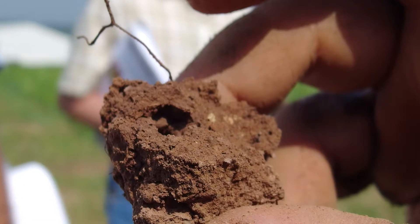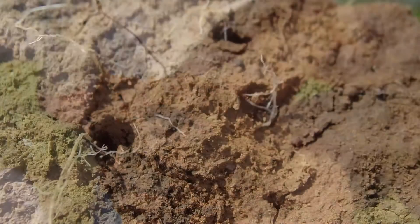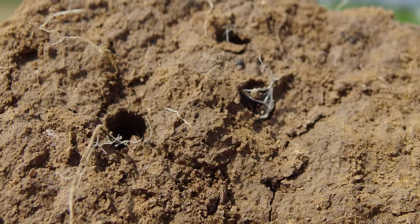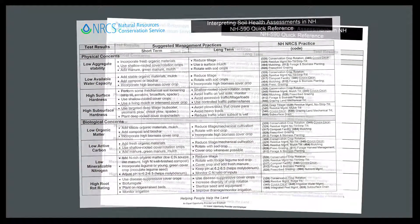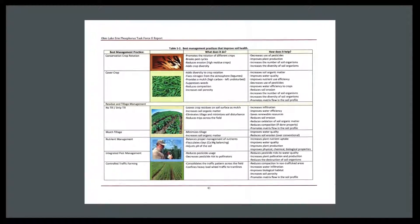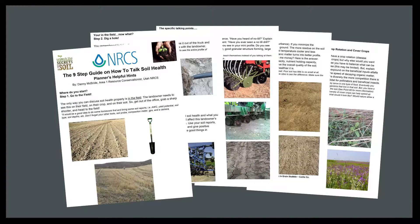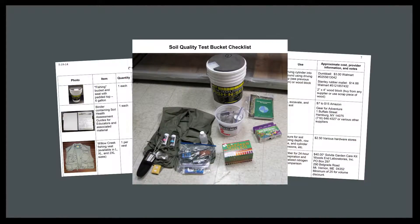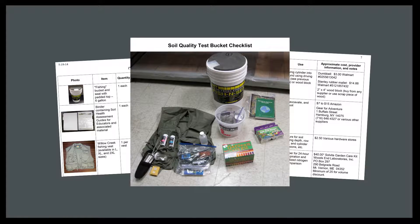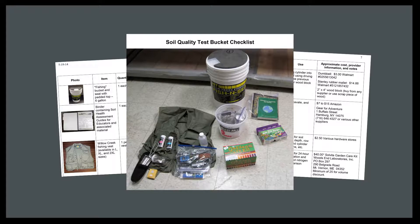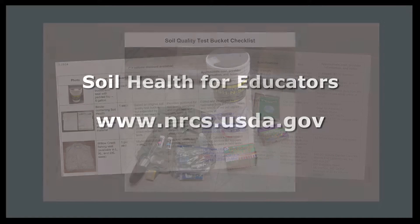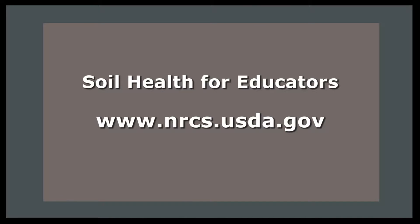These tests can uncover a lot of information about the soil. Landowners, farmers, and students will be able to see the results, but it is crucial that you relate what they're seeing to the production and conservation practices they use on the farm. Additional details about soil health buckets, including a supply list, procedural details, and interpretive information, are available in the soil health for educators section of nrcs.usda.gov.